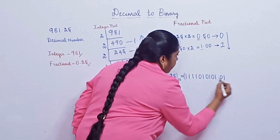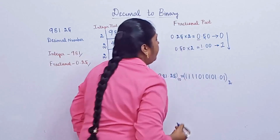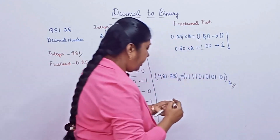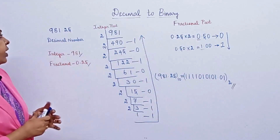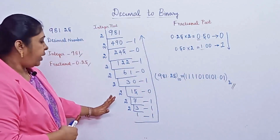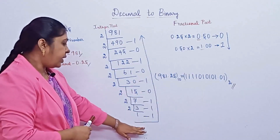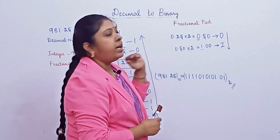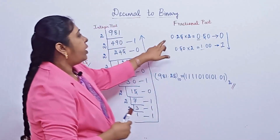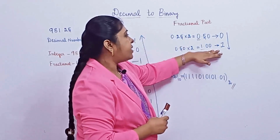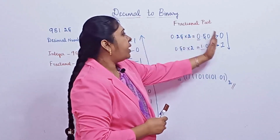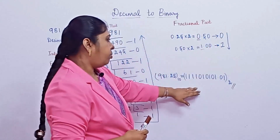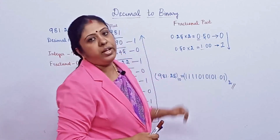To summarize: for the integer part, continuously divide by 2, note the remainders, and write from bottom to top. For the fractional part, multiply by 2, collect the integer parts, and stop when the fractional portion reaches 0.00 — then write those integer parts from top to bottom. This is the final answer for converting the decimal number 981.25 to binary.